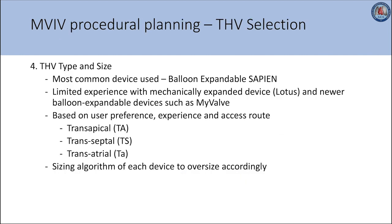The most common device used is the balloon expandable Sapien platform, which can be implanted through all different approaches. There is limited experience with devices such as Lotus, which is currently implanted only through the transapical access. Transseptal access is the least invasive and preferred for balloon expandable platforms. Initially, mitral valve-in-valve used the transapical approach; however, with increasing experience and better delivery systems, less invasive approaches such as transseptal are currently preferred. Although in highly selective cases, transatrial has also been used.